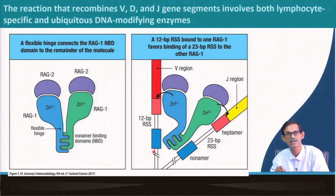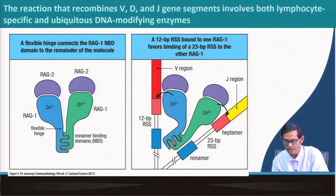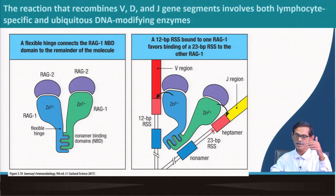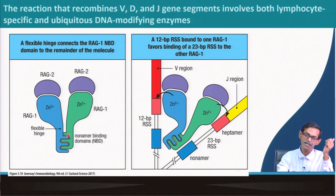The next slide in cartoon form is better to understand. The nonamer binding protein makes a flexible hinge and forms a dimer, with the zinc-dependent nuclease domain and RAG2. The nonamer binding site binds to the nonamer sequence. One DNA sequence is the variable region and the other is the J segment, both flanked by heptamer sequences separated by 23 or 12 bp spacers.